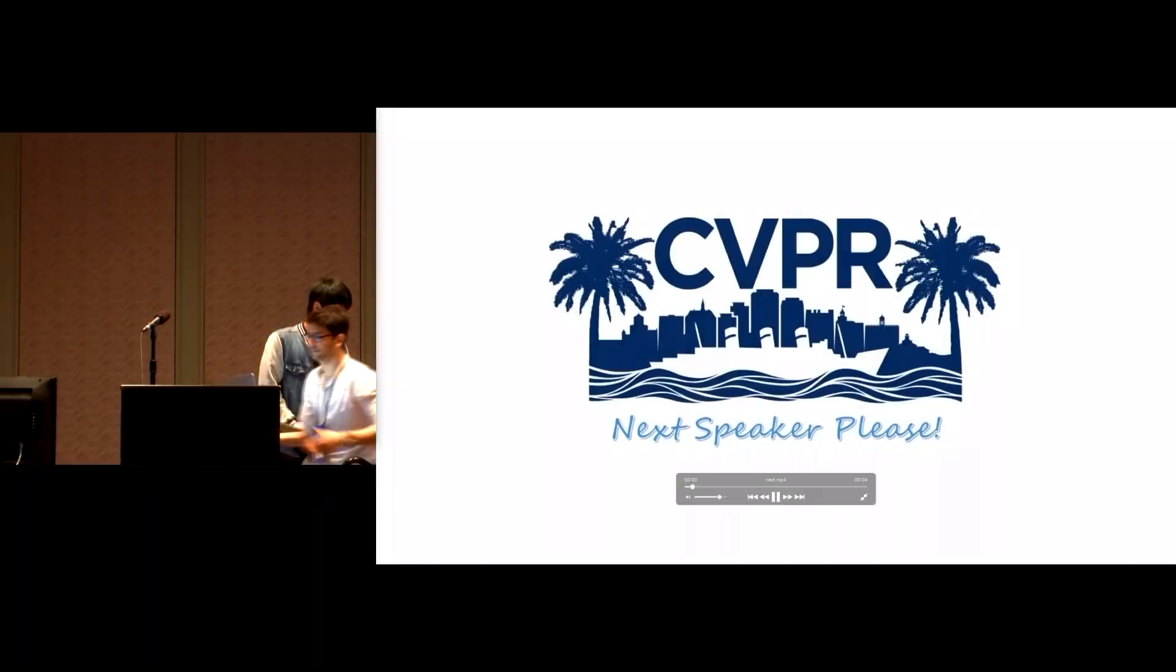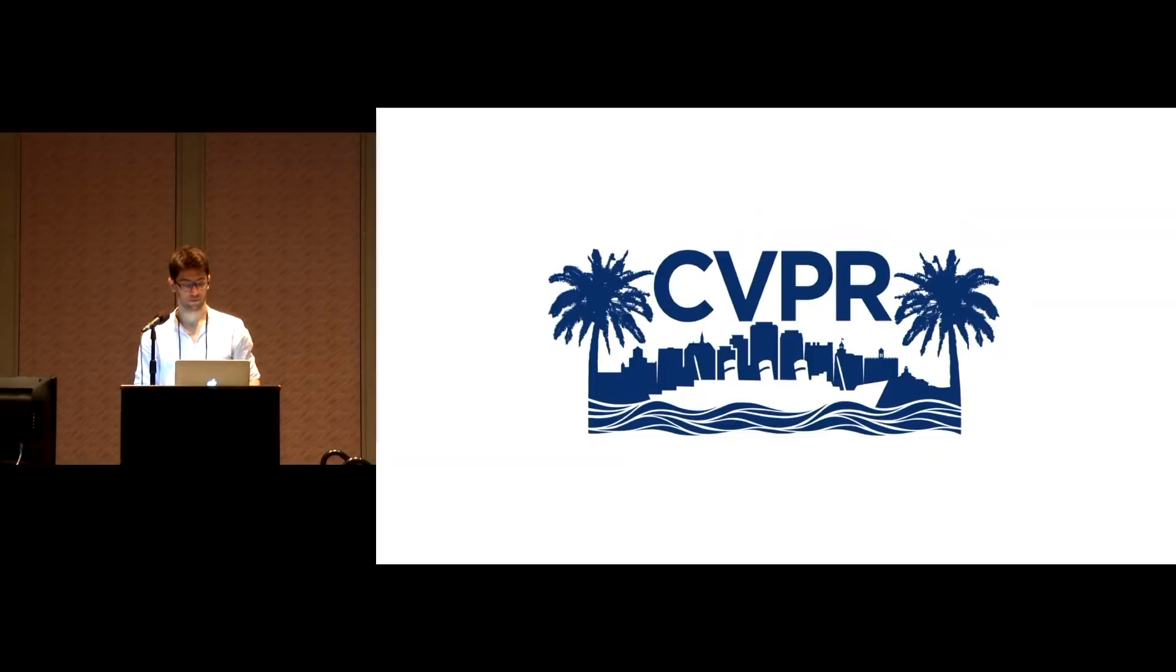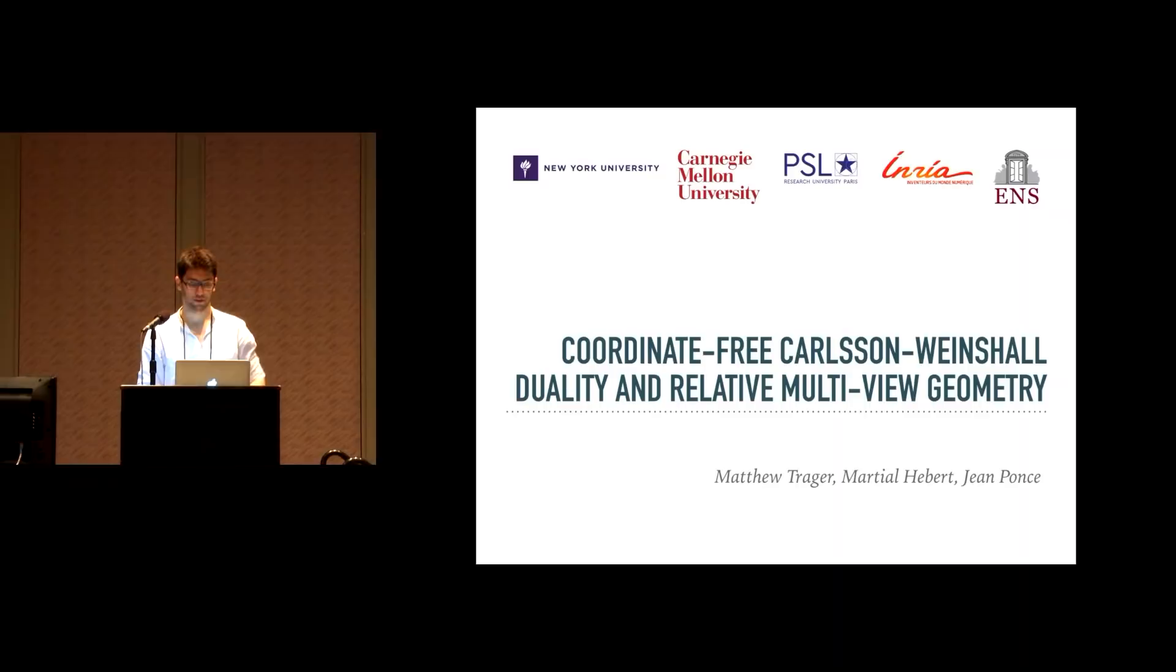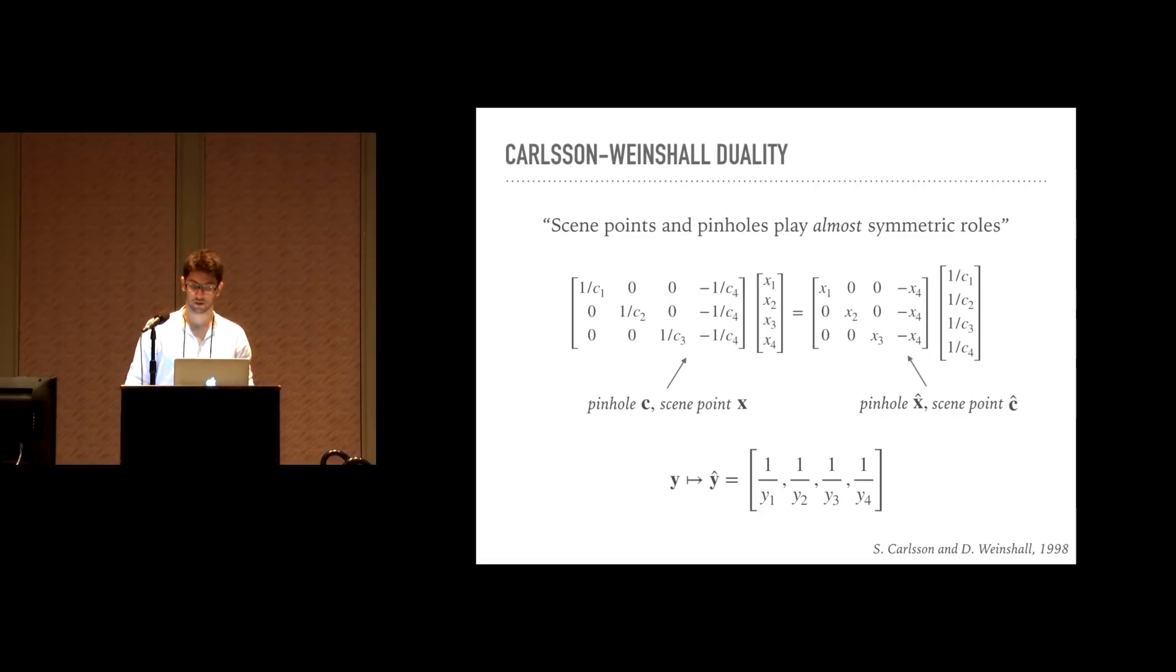Thank you for coming to my talk. My name is Matthew Trager, and I'm a postdoc at New York University. This is work that I did during my PhD with my advisors Marcel Aver and Jean Ponce. So in classical multiple view geometry, Carlsson-Weinshall duality basically states that scene points and camera pinholes play almost symmetric roles. More precisely, for a particular type of projective camera model sometimes known as a reduced camera, the projection of a point X from a pinhole C is the same as a projection of a point C-hat from a pinhole X-hat, where hat denotes this nonlinear involution that acts on projective points by inverting all of the coordinates. This fact is remarkable, and it can be used to develop dual versions of reconstruction algorithms where the role of pinholes and scene points is swapped. On the other hand, based on this description, the role of the involution and the duality is difficult to understand geometrically, since these expressions appear to rely on particular choices of coordinates and camera models.